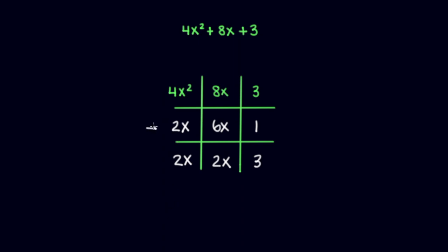We take the values from the first row, particularly the right and left ones, into our first binomial, 2x plus 1. And from this last row, 2x and 3 to get 2x plus 3.